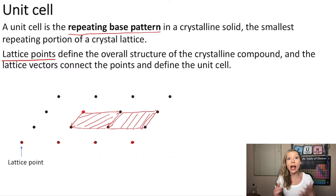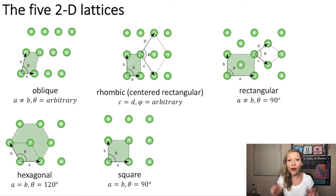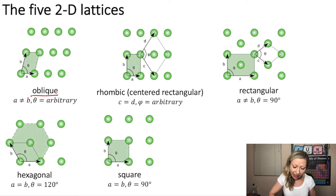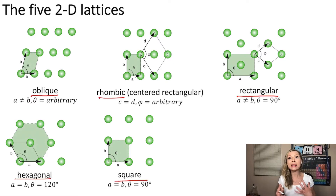Now it is really interesting that there are only five different crystal lattices in two dimensions, with different sizes of lattice vectors and with different angles between them. Those are the oblique, the rhombic, the rectangular, the hexagonal, and the square. Basically these are the only types of shapes that you can put together without any gaps to create a crystal lattice.